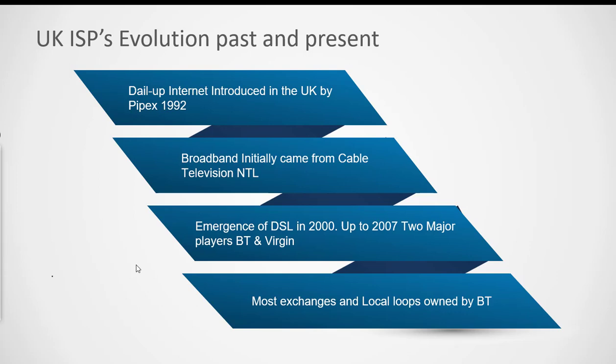Looking at the evolution, dial-up internet started back in 1992 with Pipex as the first dial-up provider. Broadband initially came from cable television providers like NTL and Telewest, with NTL being the first broadband provider in the UK. Then we saw the emergence of DSL networks in 2000 and beyond, using BT's existing copper network to provide higher-frequency DSL. On the cable television side, Virgin was a major provider.